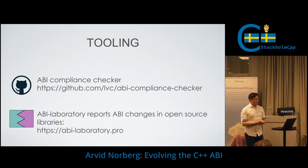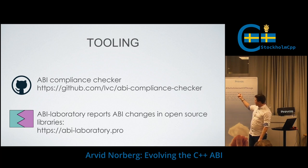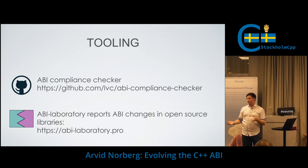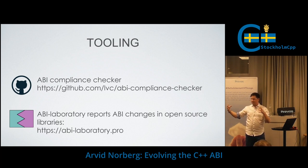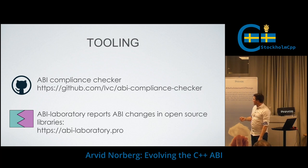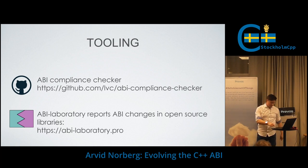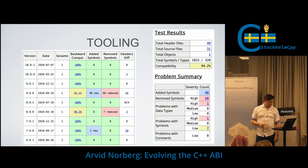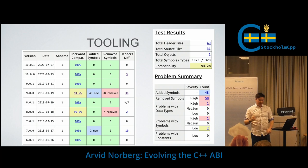There are some great tools for analyzing ABI. The ABI compliance checker is great for CI: make a dump of your first version and ensure every CI build is compatible. There's also the ABI laboratory, which scans many open source libraries and gives nice reports showing all versions with warnings about changed symbols so you can drill down and assess severity.